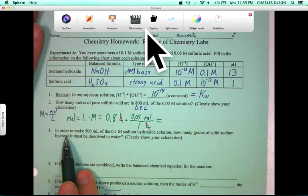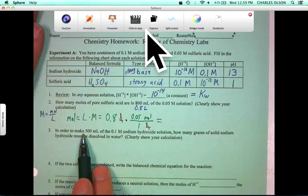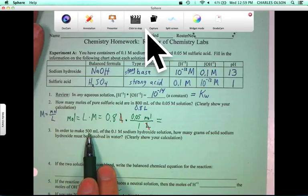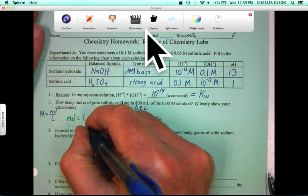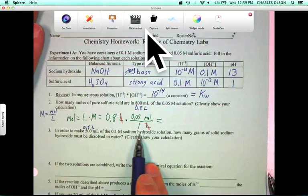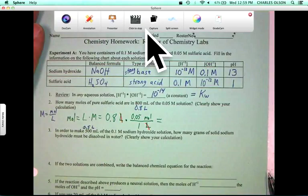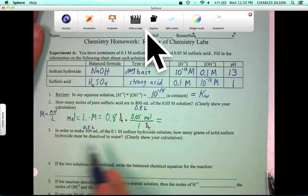Now, this question here, number three, is very similar. 500 mils, or we could call that 0.5 liters of our 0.1 molar solution. And it asks, how many grams of solid sodium hydroxide? So this is grams, not moles. It's a two-part question.